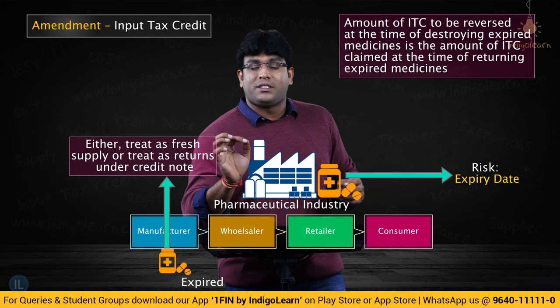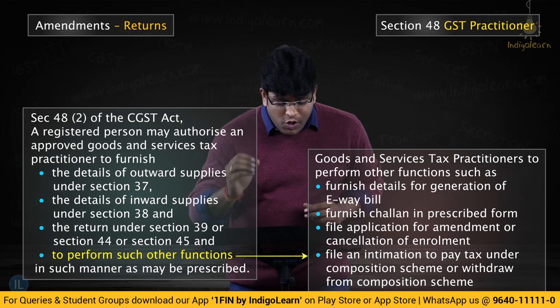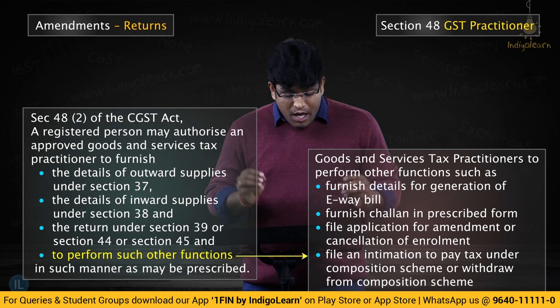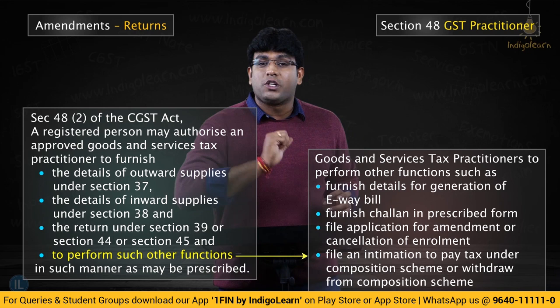The next amendment is in the chapter of returns, especially in relation to section 48, which deals with the concept of GST Practitioner (GSTP). Earlier, the law specified a list of activities which a GSTP could perform. Now the scope of activities has been enhanced and some more points have been added: furnish information for generation of e-way bill, furnish details of challan in the prescribed form, file an application for amendment or cancellation of enrollment, and file an intimation to pay tax under composition scheme or to withdraw from composition scheme.